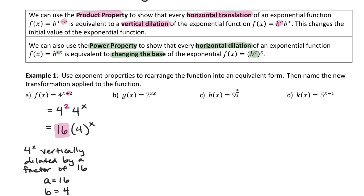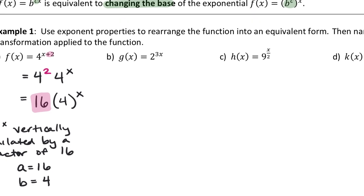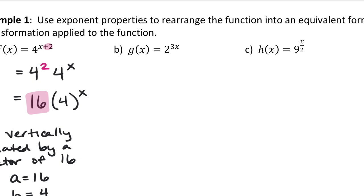For letter b, 2 to the 3x — which is 2 to the x horizontally dilated by a factor of one-third — I can rewrite using the power property: 2 to the 3rd raised to the x power gives 2 to the 3x, since power to a power means multiply. What is 2 to the 3rd? 8. So this is really 8 raised to the x power. I have completely changed the base of this function. It's still equivalent to 2 to the 3x because 2 cubed is 8. So 8 to the x and 2 to the 3x are the exact same shape on a graph.